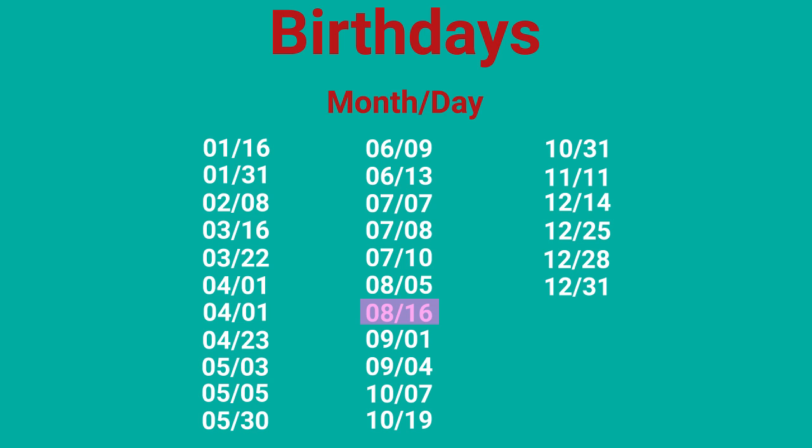If you turn the list into a sorted list using the month-day format, then you know all the birthdays in chronological order. So, the next date after your birthday in this list is the date you're looking for.